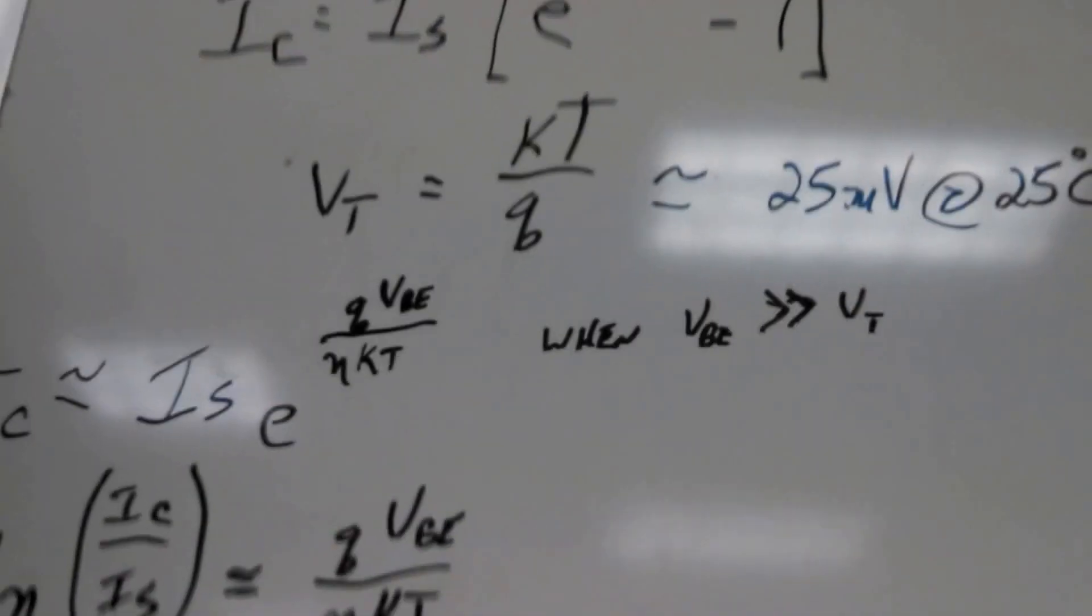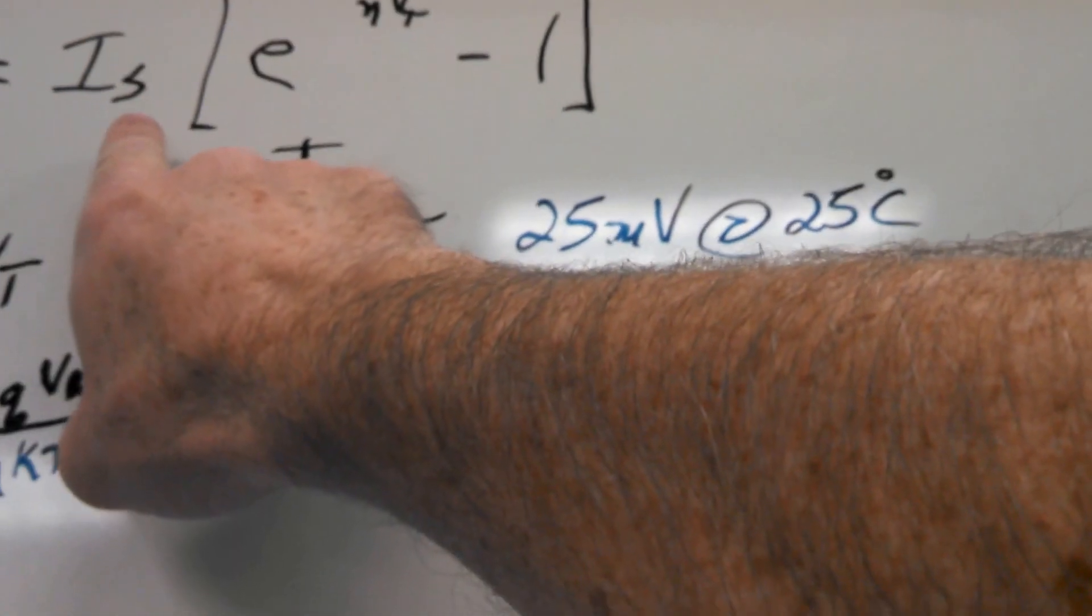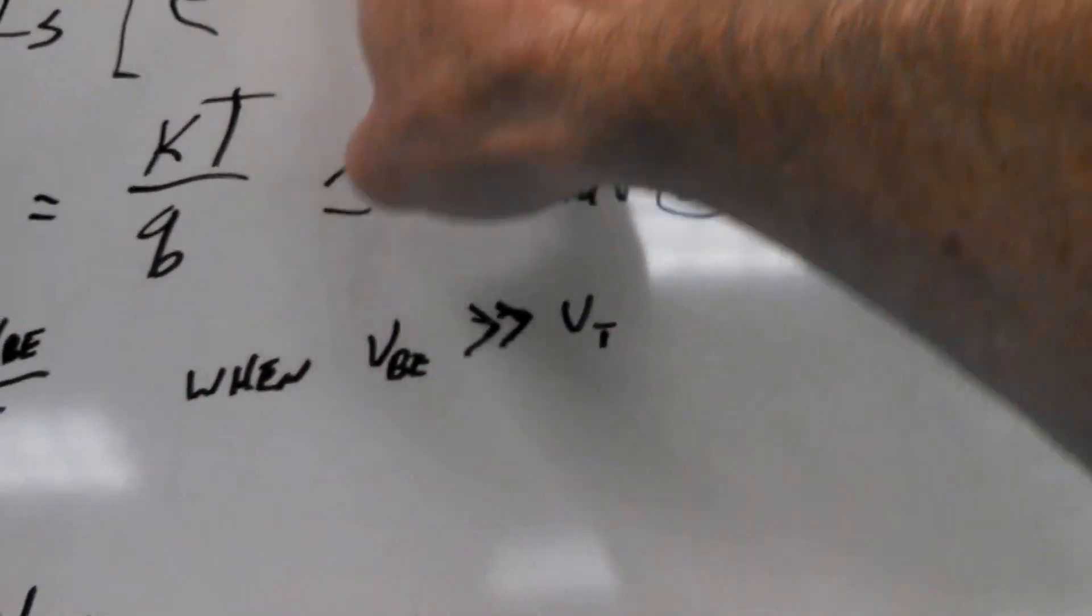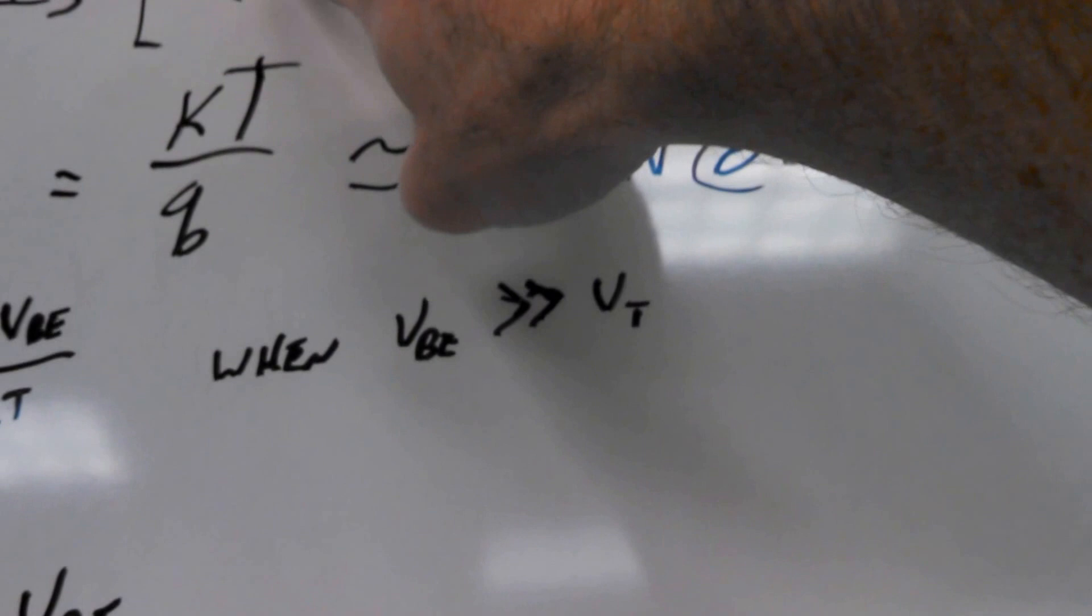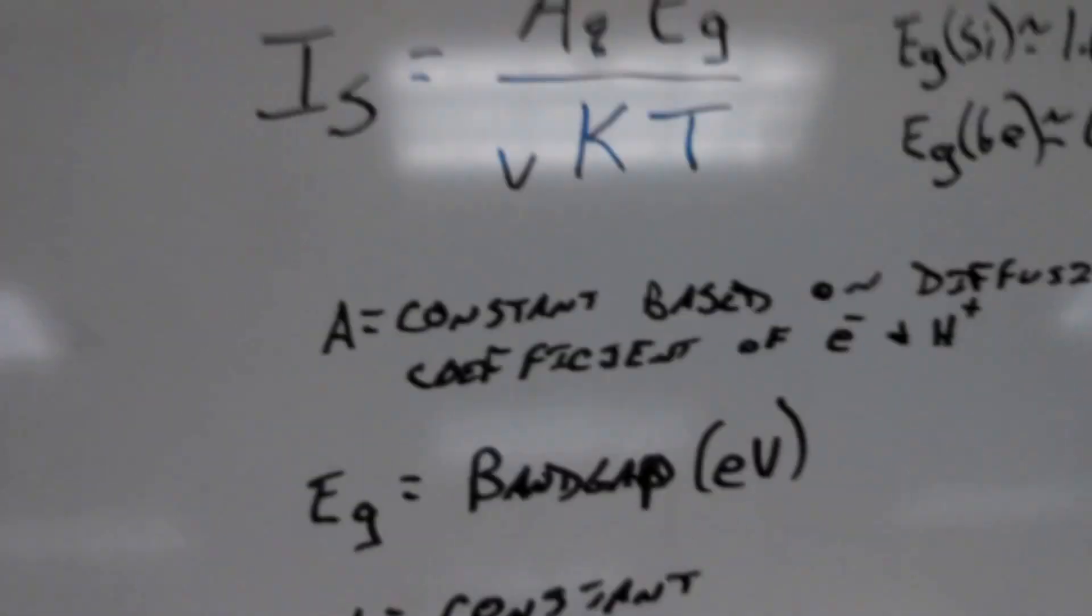So how does this work? I've already done the math out, so we don't have to do it in front of everybody here. The diode current IC is the collector current, is equal to IS, which is the reverse saturation current, times E to the base-emitter voltage over N and the thermal voltage. I have all this stuff defined over here, and we'll get to it in a minute.